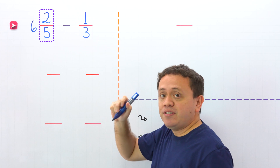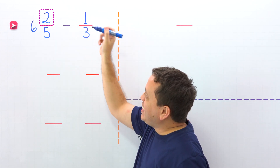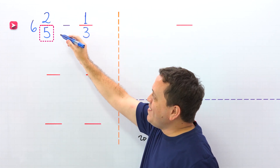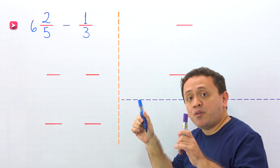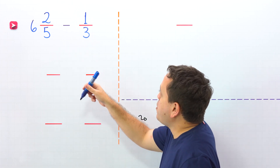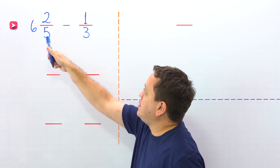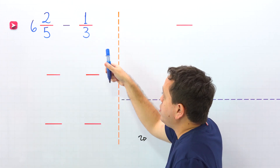2 fifths is a proper fraction, given that the numerator, 2, is less than the denominator, 5. Are you ready for the first example? In this example, we need to subtract 6 and 2 fifths minus 1 third. We need to subtract a fraction from a mixed number.